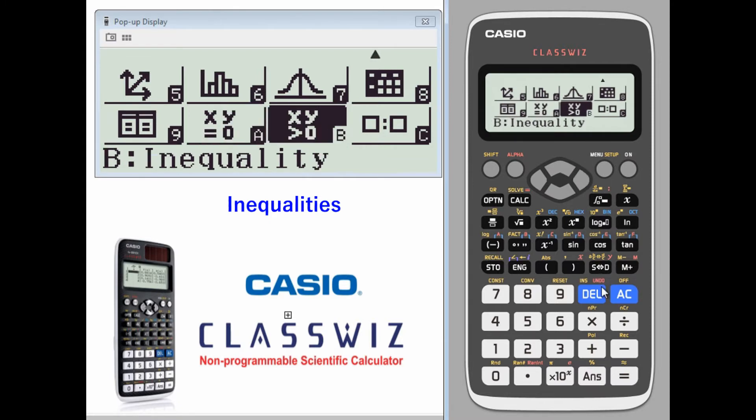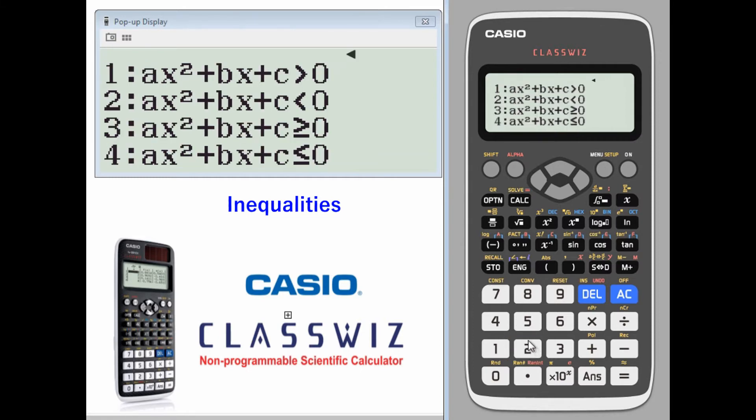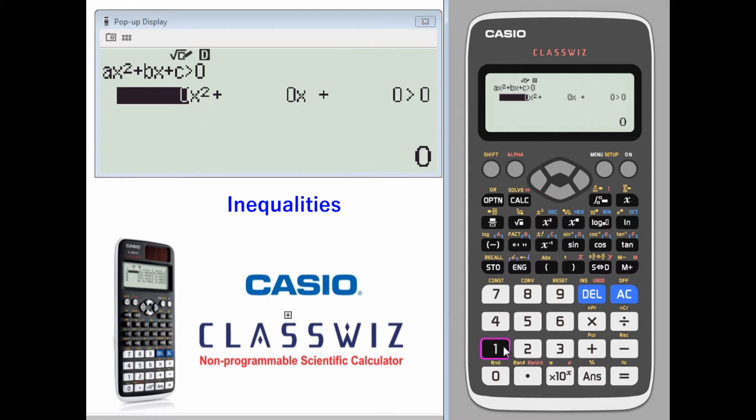Inequalities. From the main menu, let's go into the letter B, polynomial degree. We'll go with the second degree polynomial. We'll go with an inequality of ax squared plus bx plus c is greater than zero.